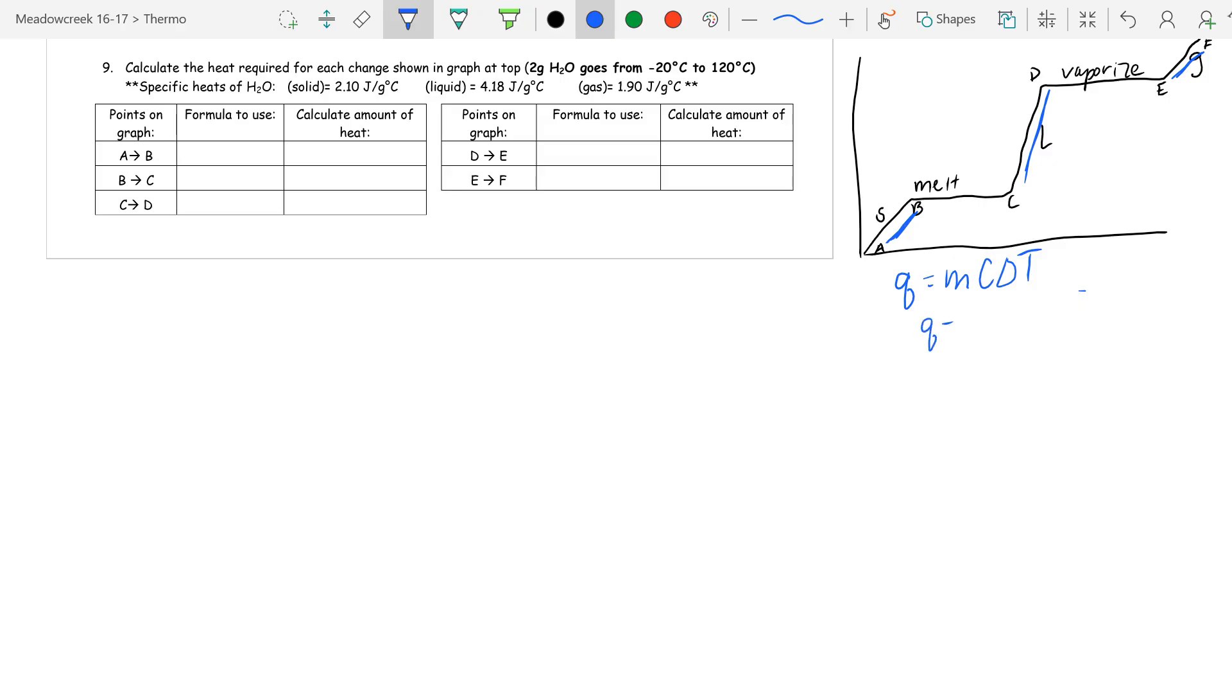Q measures your heat in joules. M is the mass of your substance measured in grams. Capital C is your specific heat, measured in joules per gram degree Celsius, and it's also different for what state of matter you're in. And then delta T is equal to your change in temperature, which is your final temperature minus your initial temperature.